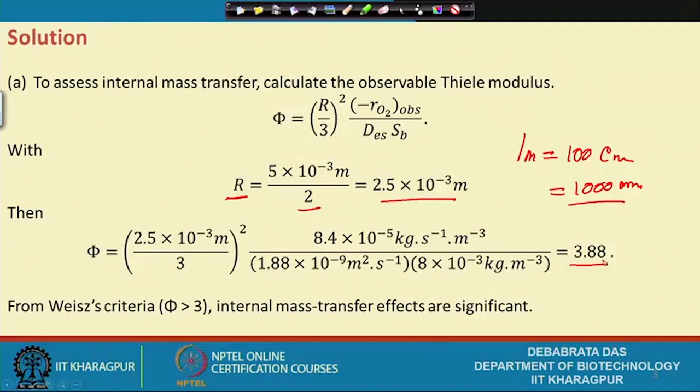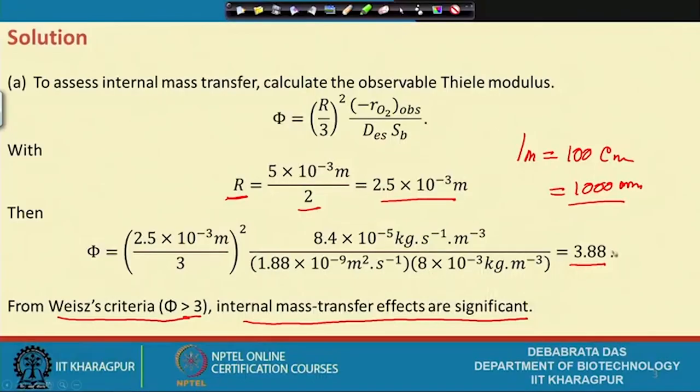From the table shown in the last lecture and using the Weisz criteria, if the Thiele modulus φ is greater than 3, then there is a mass transfer limitation problem in the system. Since our calculated φ = 3.88 > 3, this clearly indicates that internal mass transfer effect is significant and mass transfer is the limiting factor — not the reaction.